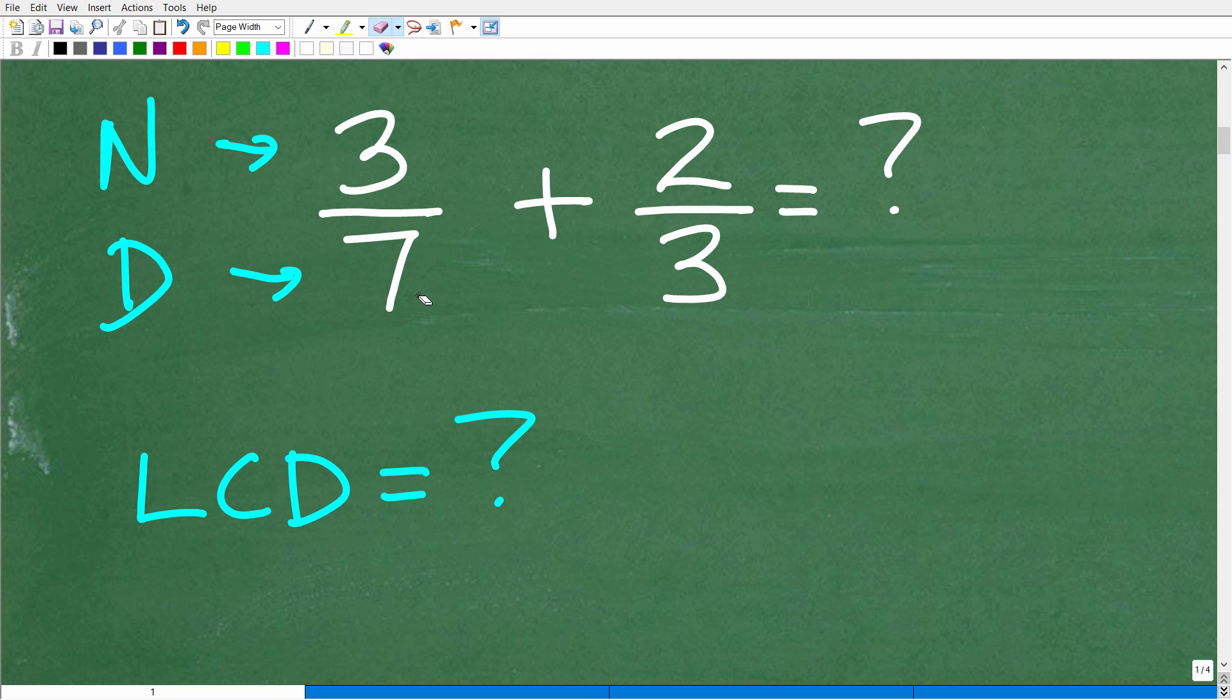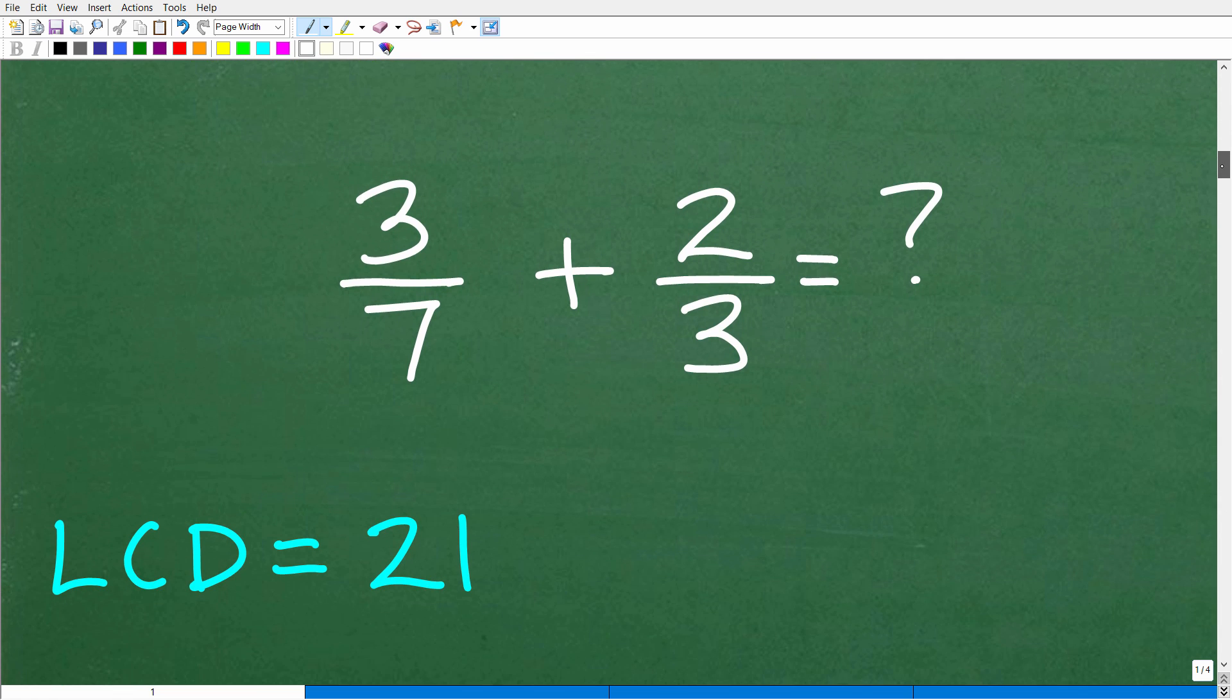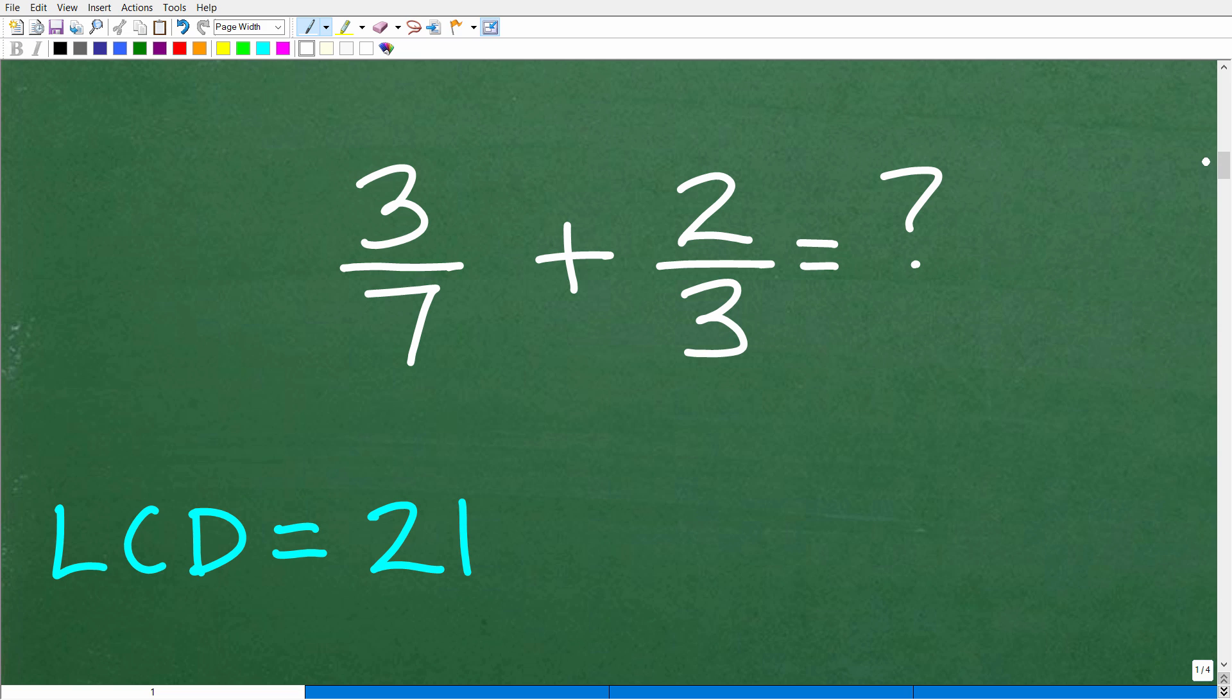Of course, all fraction problems are not this easy. When the denominators are not the same, like in this particular example, we have to find a common denominator. Specifically, we want to find the lowest common denominator. So what is the LCD for 3/7 plus 2/3? The LCD here happens to be 21. The LCD is the lowest number that both of these numbers divide into. 21 can be divided by 7 and also by 3 without a remainder.